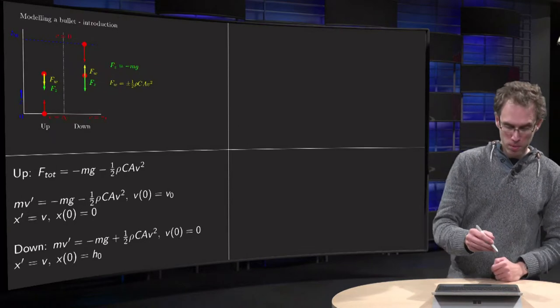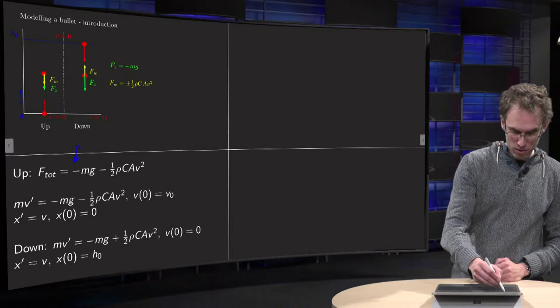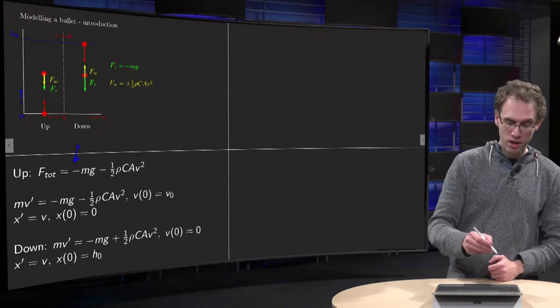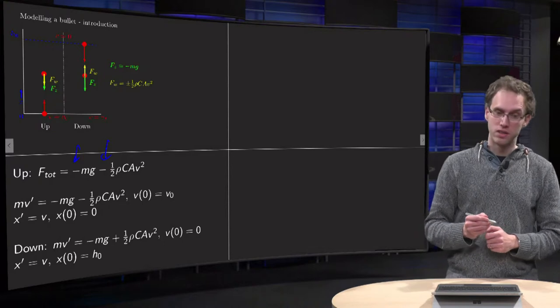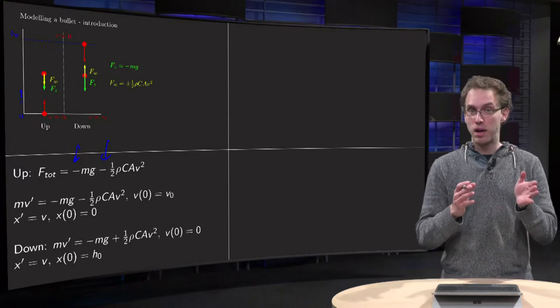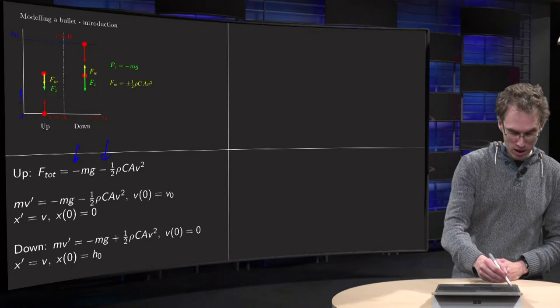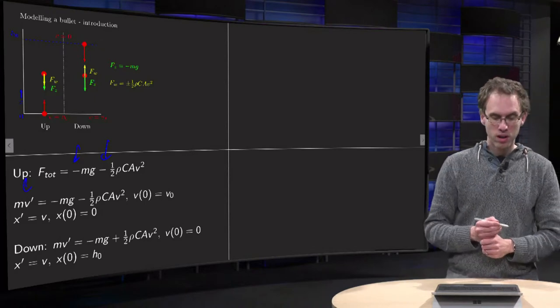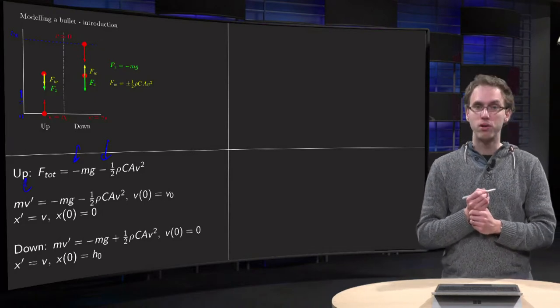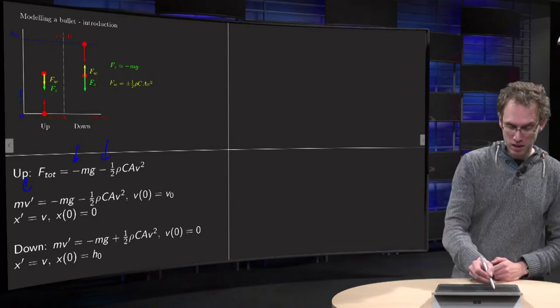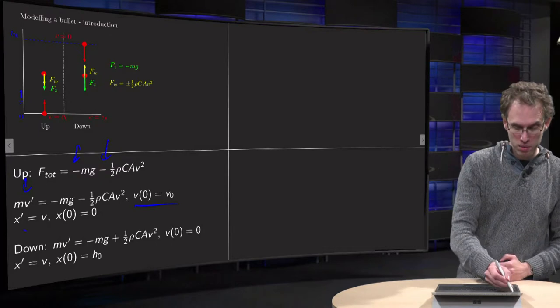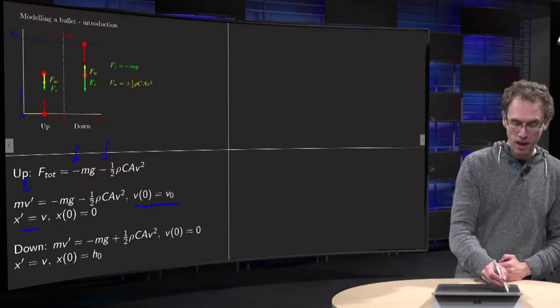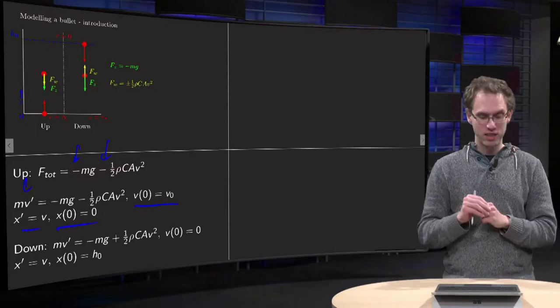So, the problem. We have total force minus Mg, of course, and minus frictional force. So we get Ftotal equals M times A equals M times V prime, equals minus Mg minus one-half rho CA times V squared, with some initial velocity V zero, and furthermore we know X prime equals V, and we start at the ground at height zero.